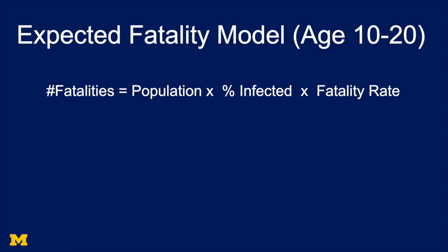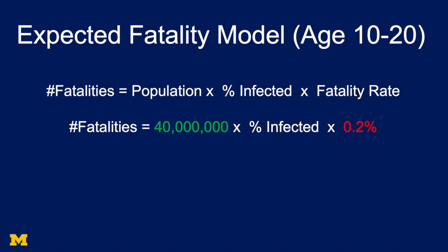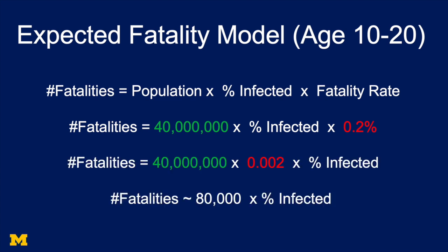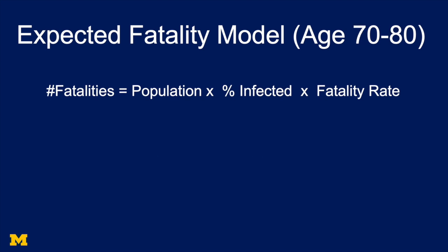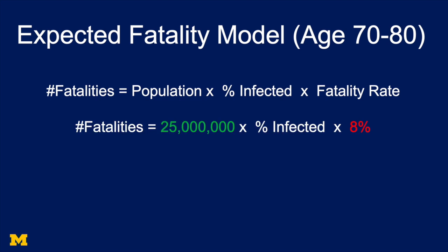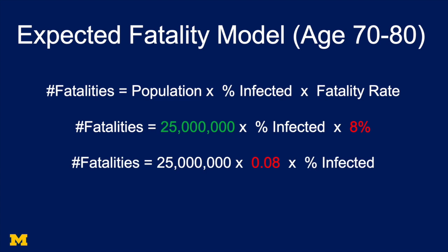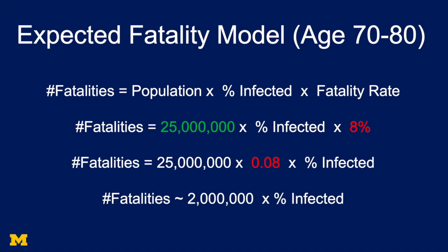If we look at any one of those age groups — say, people between age 10 and 20 — the number of fatalities equals population times percentage affected times the fatality rate. There are 40 million people between ages 10 and 20, with a fatality rate of only 0.2%. So the number of fatalities is going to be 80,000 times the percentage infected for this age group. Comparing this to people aged 70 to 80, there are 25 million people with a fatality rate of around 8%, giving 2 million times the percentage infected. So we suddenly see that the older population is much more vulnerable.